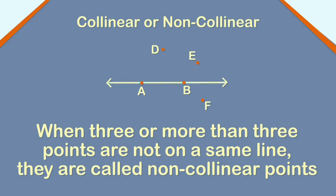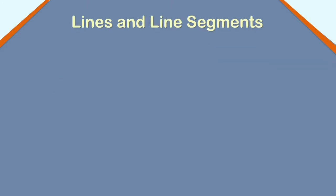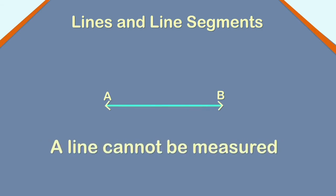A line is a set of points joined along a straight path. It has no ends and extends endlessly in opposite directions. Thus, arrow marks are drawn on both sides to show that it never ends. A line cannot be measured.